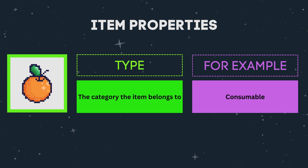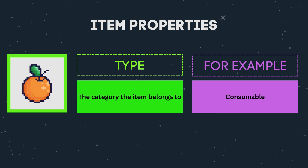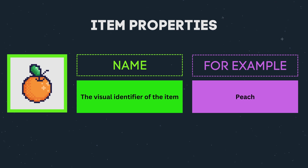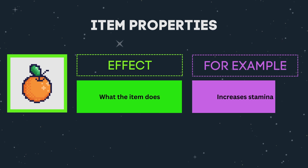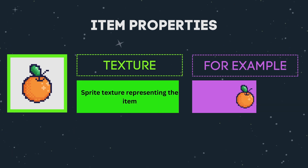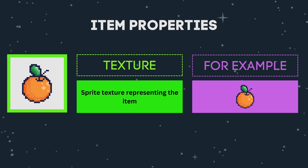The first property is our type. We will assign our item with the type property to categorize the item, and we can then use this type to execute specific logic for that item. For example, you might have a type of weapon, consumable, armor, or quest item. The next property is the name property, which is the identifier of the item — it's what is displayed to the player when they hover over the inventory system. The third property is the effect property, which describes what the item does when it is used or equipped. For example, a healing potion might have the effect of restoring our health. And finally, we have the texture property, which is just a visual representation of the item in the game, the sprite texture.